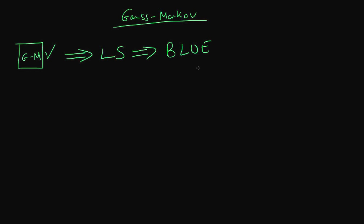But what does it mean for an estimator to be BLUE? Well it means that there are no other linear unbiased estimators which have a lower sampling variance than that particular estimator.